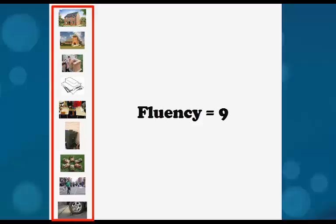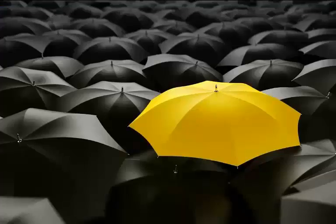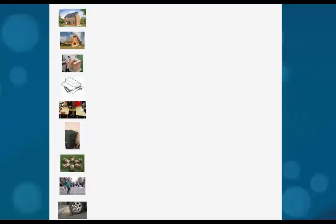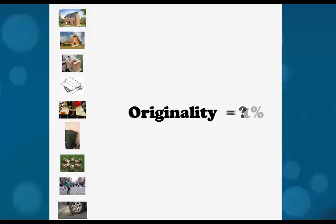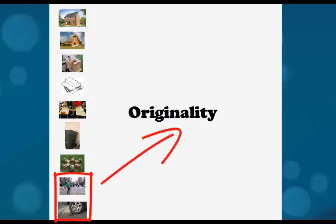Someone would argue that quality is more important than quantity. What if you come up with only one answer, but you are the only person who has this idea? So a second score often used in the Divergent Thinking Test is the originality score, which is the number of answers that are unique. People use an objective scoring method, which is to count all the answers given by less than, say, 1%, 10%, or 20% of all test takers. In this example, maybe the car stopper and candle holder meet this criteria, and you get an originality score of 2.